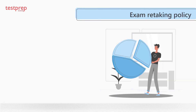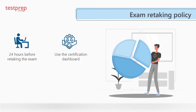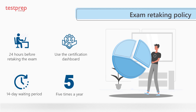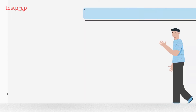Regarding the exam retaking policy: for the first time, candidates who fail must wait 24 hours before retaking the exam, using the certification dashboard in the Microsoft exam portal for rescheduling. For the second attempt, candidates must wait at least 14 days. This 14-day waiting period also applies to further attempts. Lastly, candidates can only take any exam five times per year.